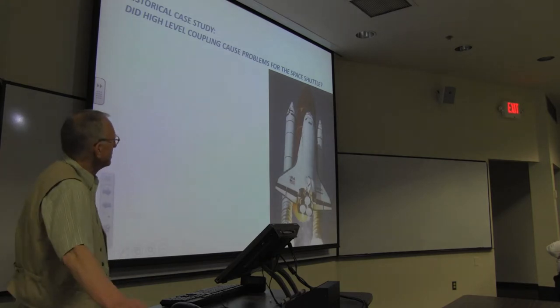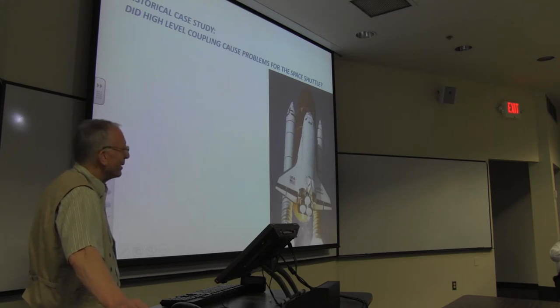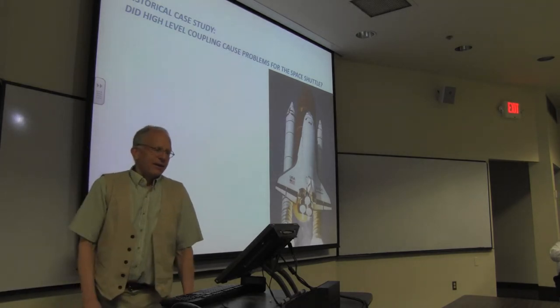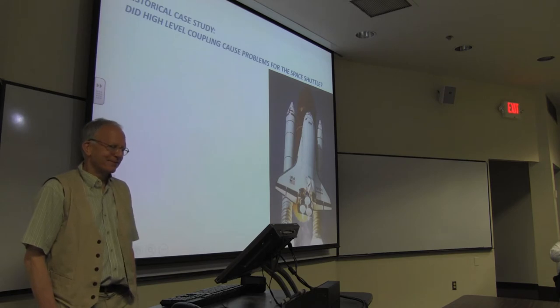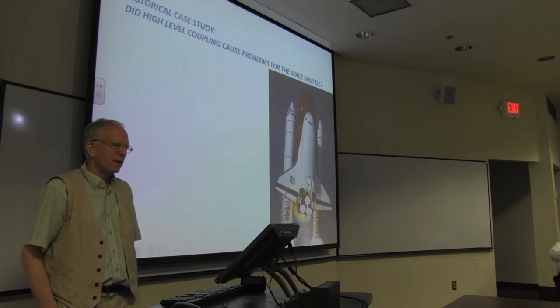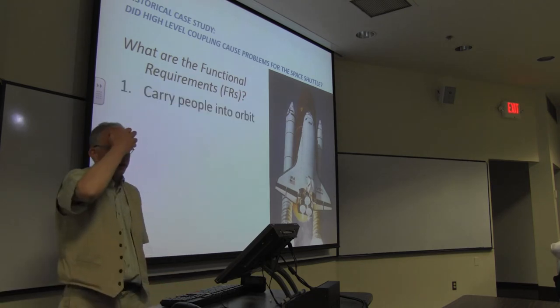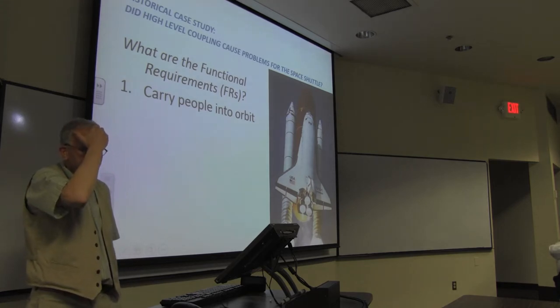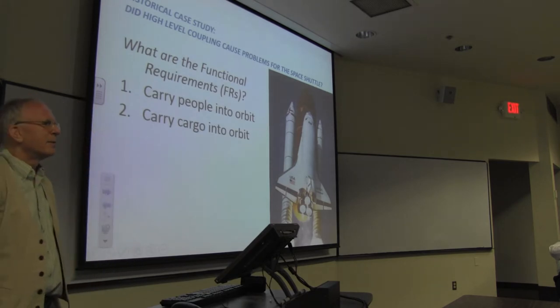Alright, so the space shuttle. This is how Americans used to get into space. Actually, we brought a lot of other people up in that too. And now we have to hire the Russians, who are having issues. So there's an example of maintaining the independence of functional requirements: get into space and guarantee the integrity of the crew. They used to be decoupled, but we had some problems with this.